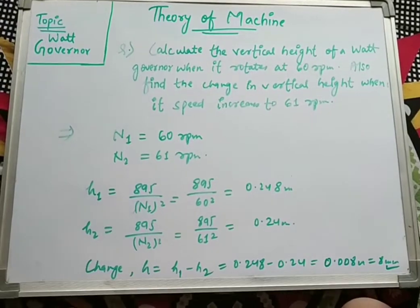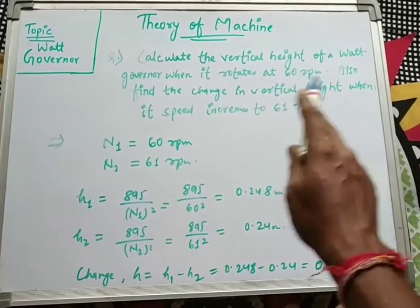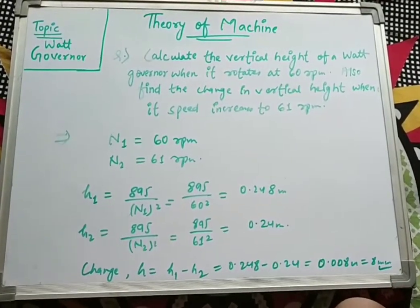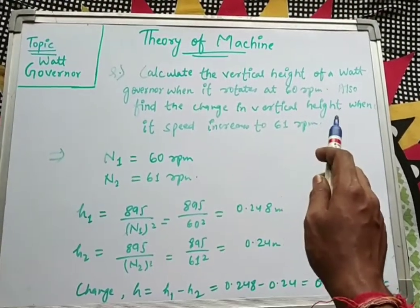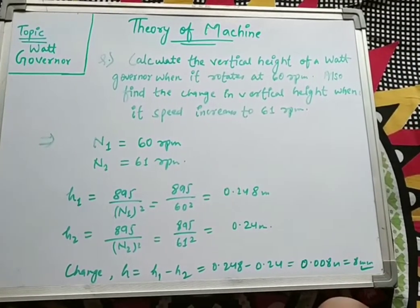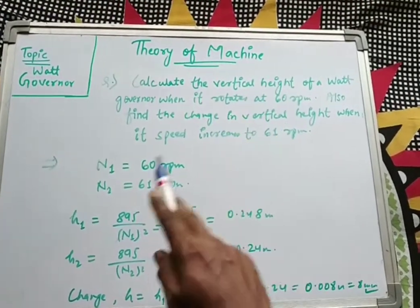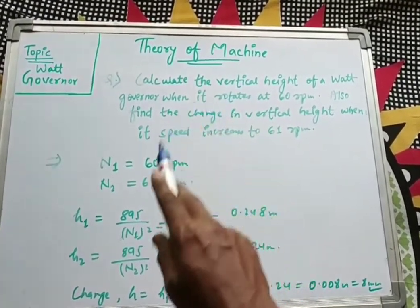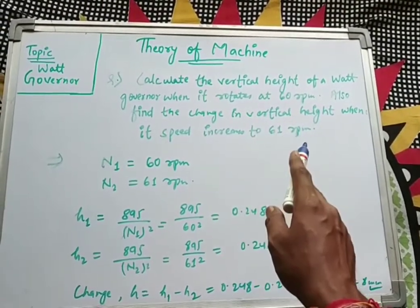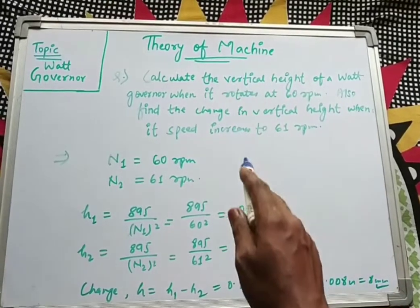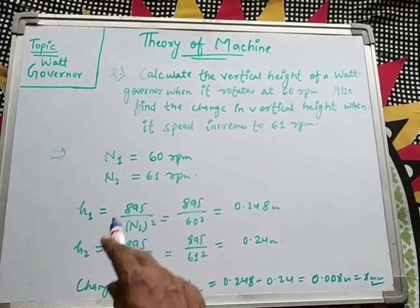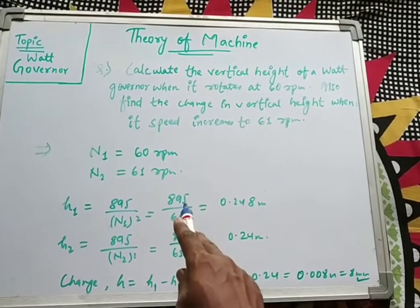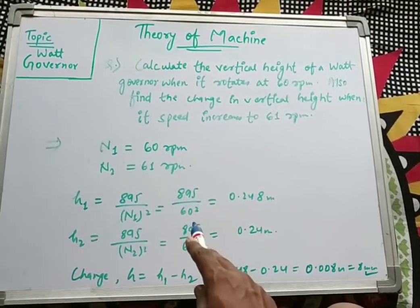For better understanding, let us solve a numerical example based on the Watt governor. Given: calculate the vertical height of a Watt governor when it rotates at 60 rpm, and also find the change in vertical height when its speed increases to 61 rpm. So we have N1 = 60 rpm and N2 = 61 rpm. For h1, applying the formula: h1 = 895 / N1² = 895 / 60² = 0.248 meters.